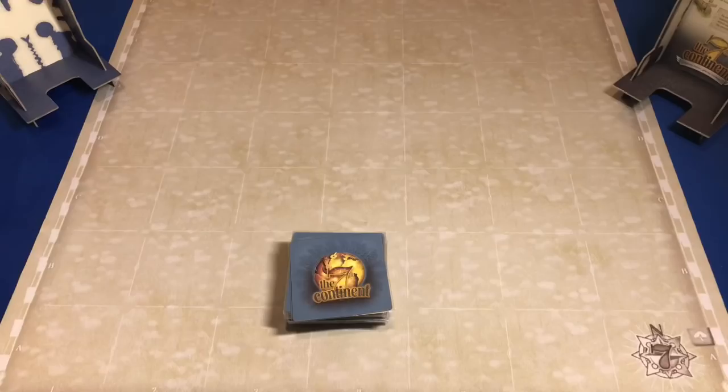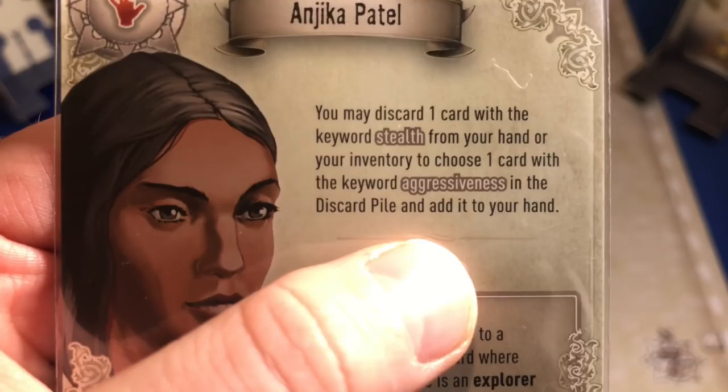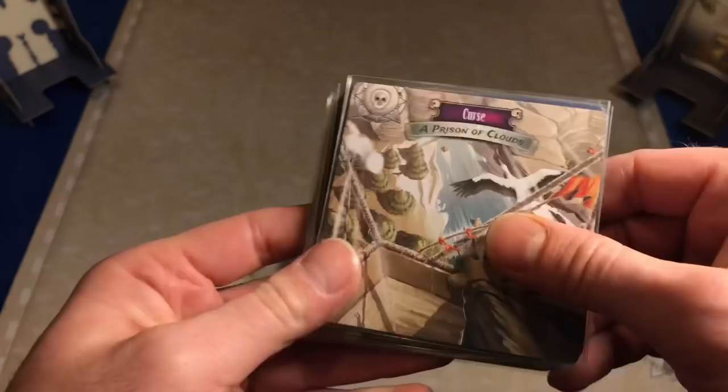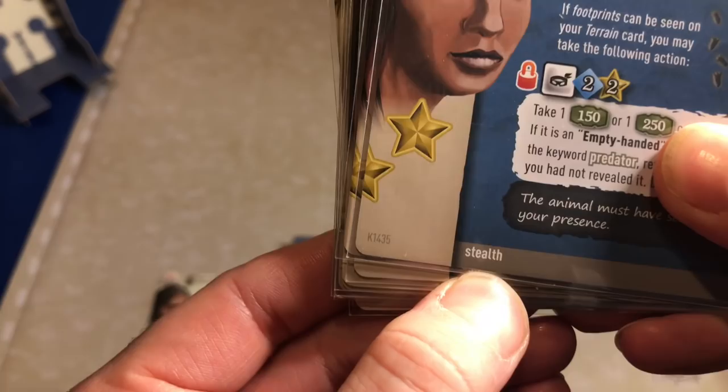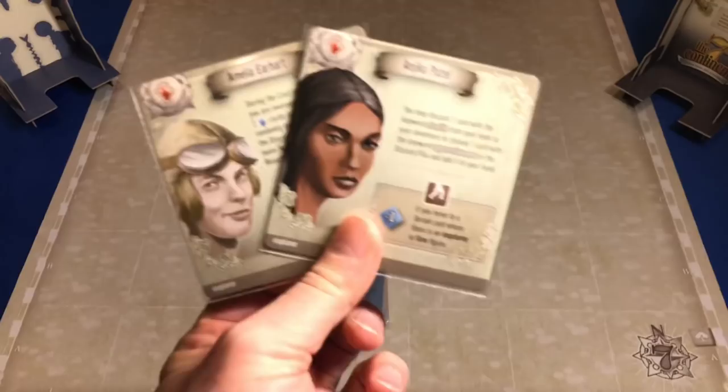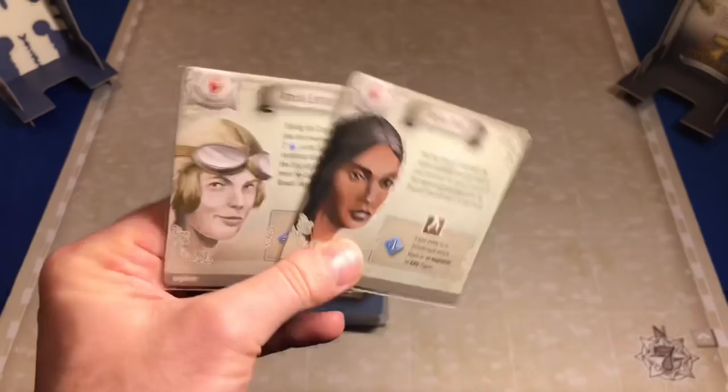Next we have Annika. It says you may discard one card with the keyword stealth from your hand or your inventory to choose one card with the keyword aggressiveness in your discard pile and add it to your hand. Each one of these cards has a keyword at the bottom. I could discard this card with the keyword stealth, and I could grab a card with aggressiveness from my discard pile and add it back to my hand. I'm going to place these off to the side so that as I gain cards, I can put them next to their characters.